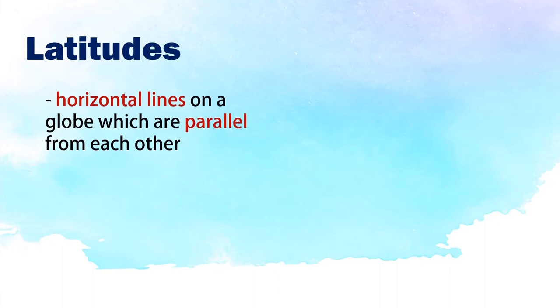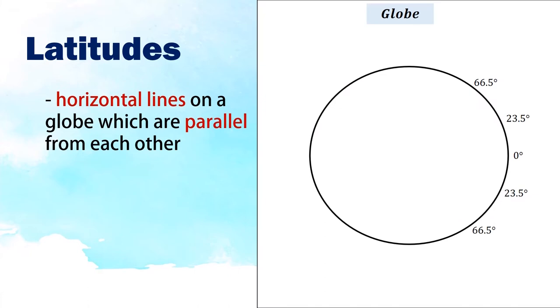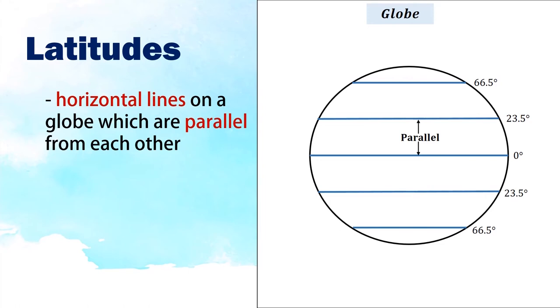Latitudes are horizontal lines on a globe which are parallel from each other. For example, in this illustration of the globe, the horizontal lines which are parallel from each other are the latitudes.